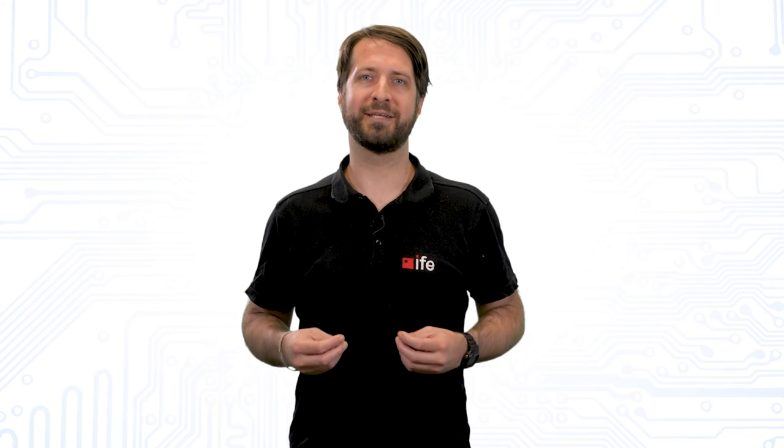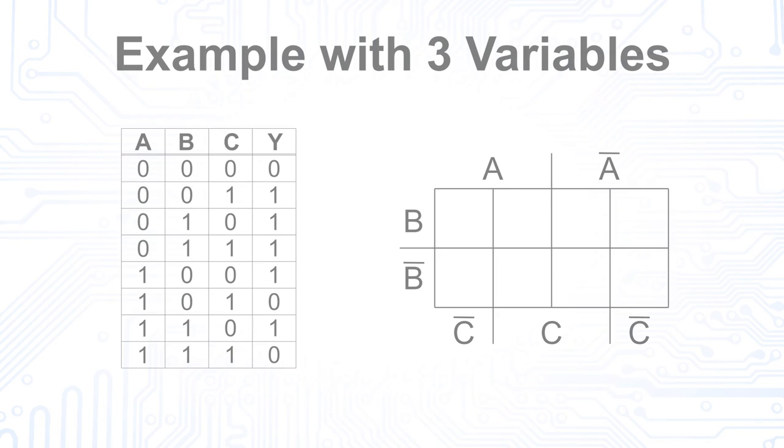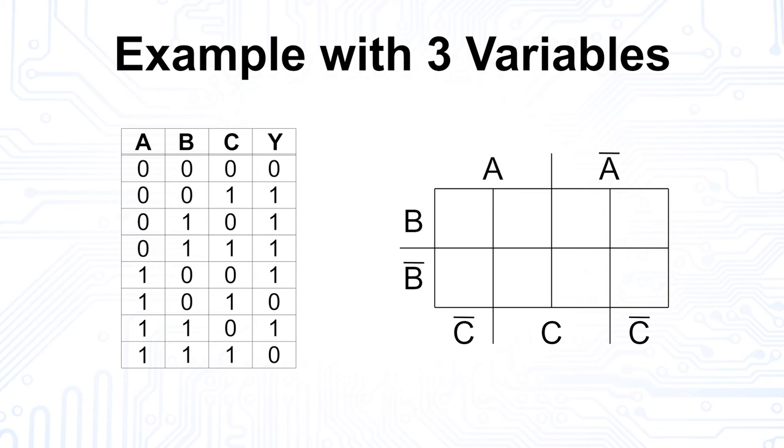To get some practice, try to minimize this table with three variables using the Karnaugh map method.